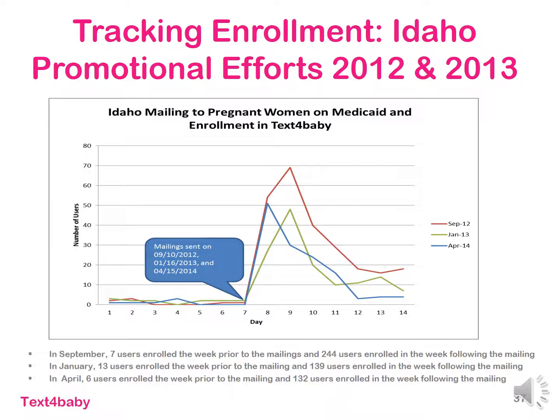The next example is Idaho. Idaho did mailings to pregnant Medicaid recipients in their state and tracked the number of new enrollees they had after their mailings were sent. They did this three years in a row. As you can see on this line chart — each year represented by a different line — they had a sharp increase in the number of new enrollees right after they sent out their Medicaid mailing, demonstrating an effective enrollment increase for that campaign and strategy.